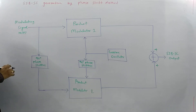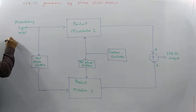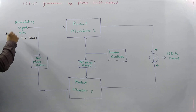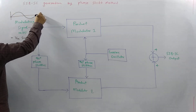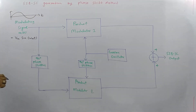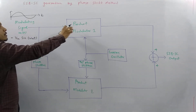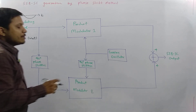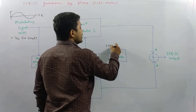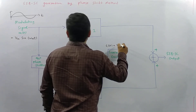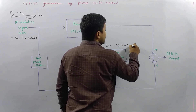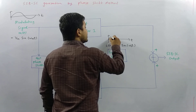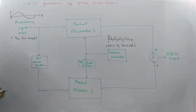We have a modulating signal at the input side. Let us consider this modulating signal is Vm·sin(ωm·t) — this is a low frequency signal. We also have a carrier signal, let's say Ct = Pc·sin(ωc·t), which is a high frequency signal. So we have a high frequency carrier signal and a low frequency modulating signal.